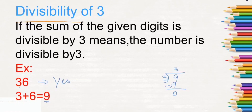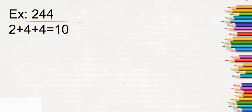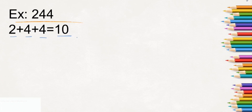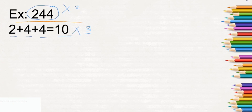When you split the digits and add them, if the sum is divisible by 3, the whole number is divisible by 3. Look at another example. When you split 244, it will be 2, 4, and 4. When you add these digits: 2 plus 4 is 6, and 6 plus 4 is 10. The sum is 10. Now check whether 10 is divisible by 3 — 3 times 3 is 9, 3 times 4 is 12 — so 10 is not divisible by 3. Therefore, 244 is not divisible by 3.